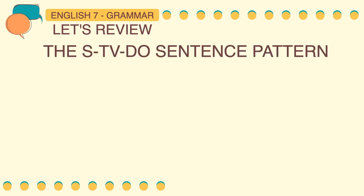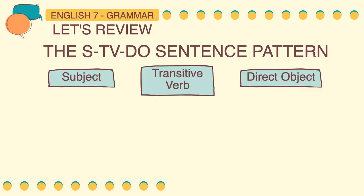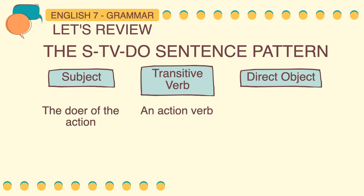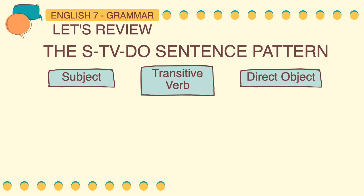Now, let's have a quick review on the STVDO sentence pattern: the subject, transitive verb, direct object. The subject is the doer of the action. The transitive verb is an action verb that expresses a doable activity. And the direct object is the receiver of the action. For example: Lafayette loves friends. Lafayette is the subject. The word loves is a transitive verb because it is a doable action that needs a receiver. Therefore, the receiver of the action loves is friends, or what we call the direct object.